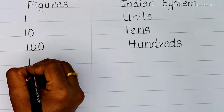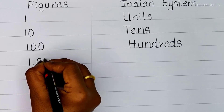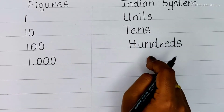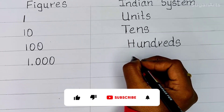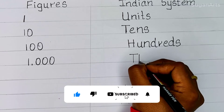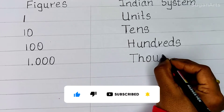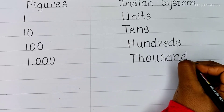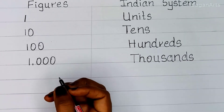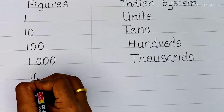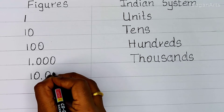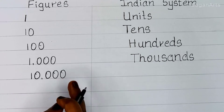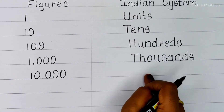So next, 1 0 0 0. So if we put 3 zeros in the Indian system we call it as Thousands. Next, 1 0 0 0 0 — so after 1 if we put 4 zeros in the Indian system we call it as Ten Thousands.